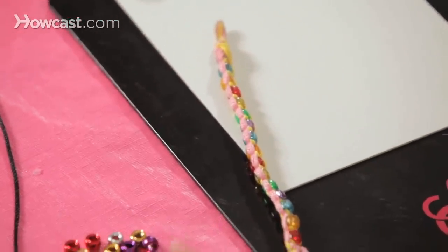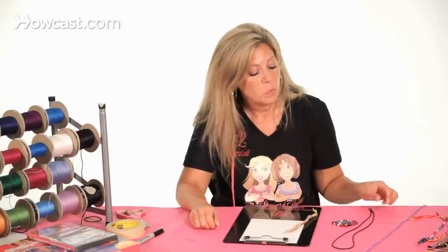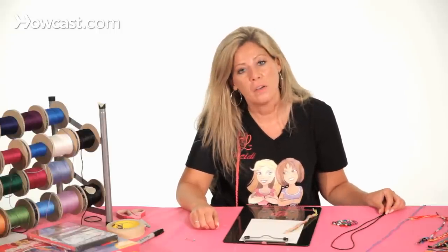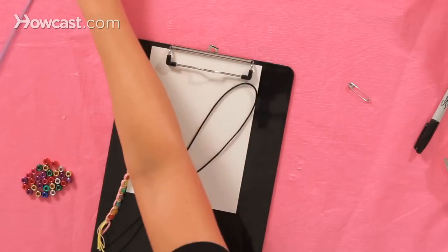We're going to need some beads, some rat tail cord, and some embroidery floss, two different colors of embroidery floss. We're going to need 30 inches of rat tail cord, which is your black cord, and 60 inches of embroidery floss.